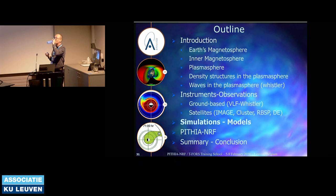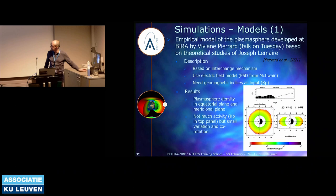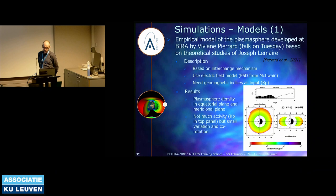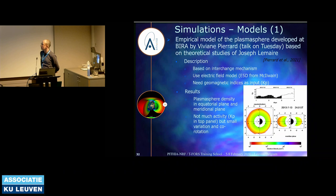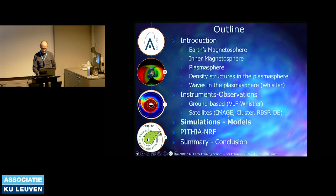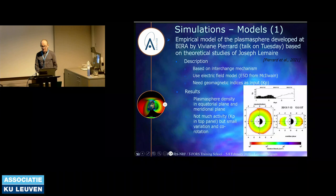Now some simulations and models. Briefly, there is the empirical model of the plasmasphere developed at our institute by Viviane Pierrard, based on theoretical studies of Joseph Lemaire. Viviane will present it tomorrow afternoon. It's based on a mechanism called the interchange mechanism, uses an electric field model made by the same person who defined the L parameter, and needs the Kp index as input. An animation shows two views of the plasmasphere density — equatorial plane and meridional plane. During a low Kp event, you can see some structures and a shoulder rotating, and some variations in the meridional plane.